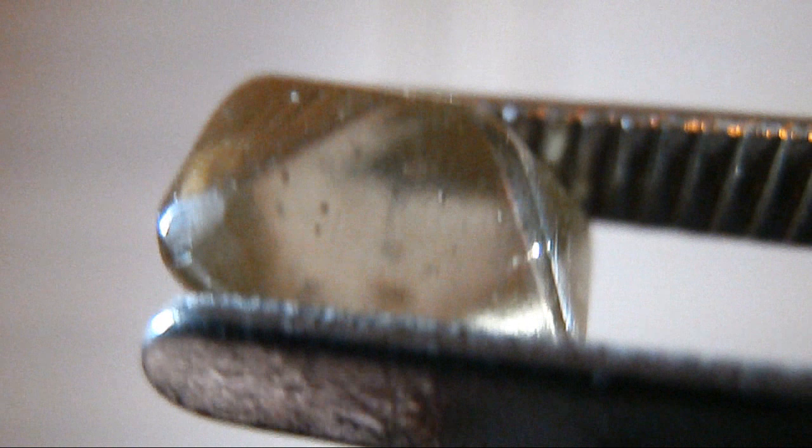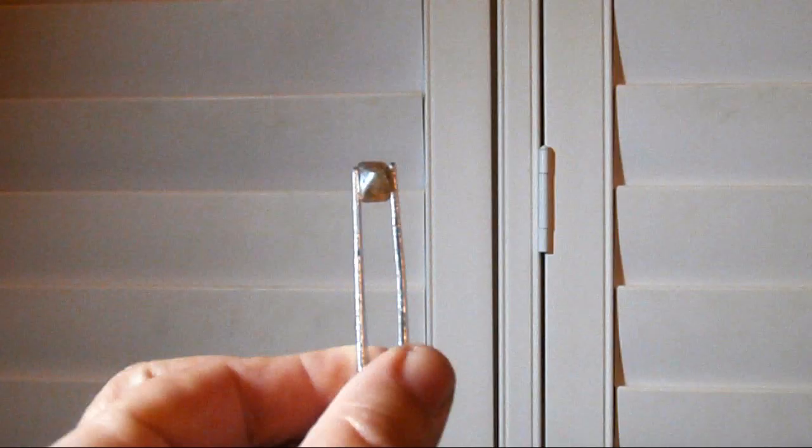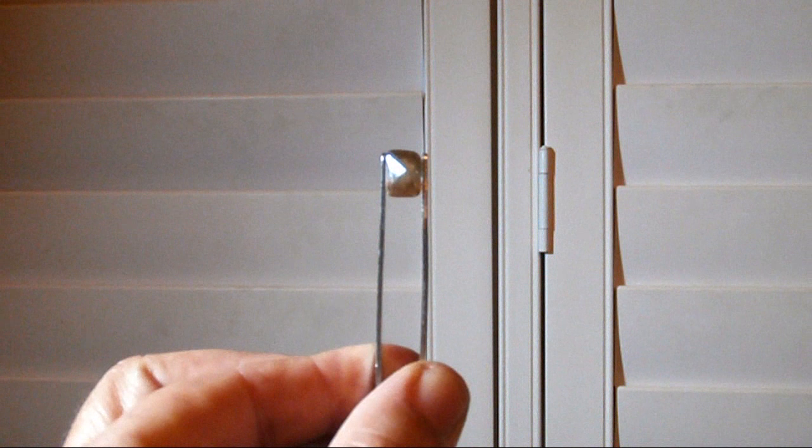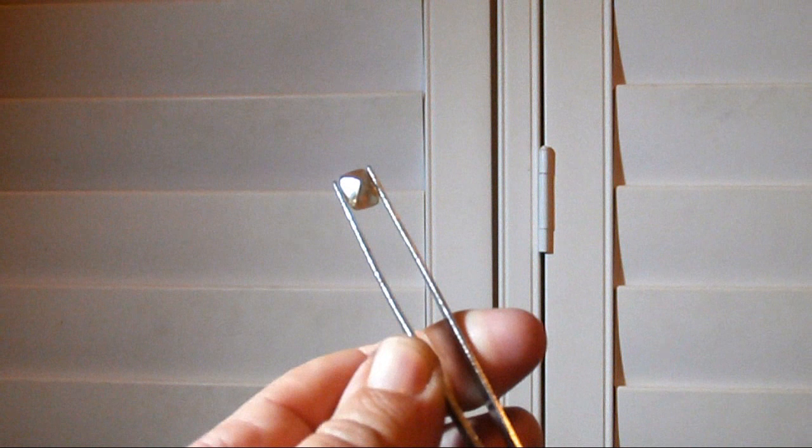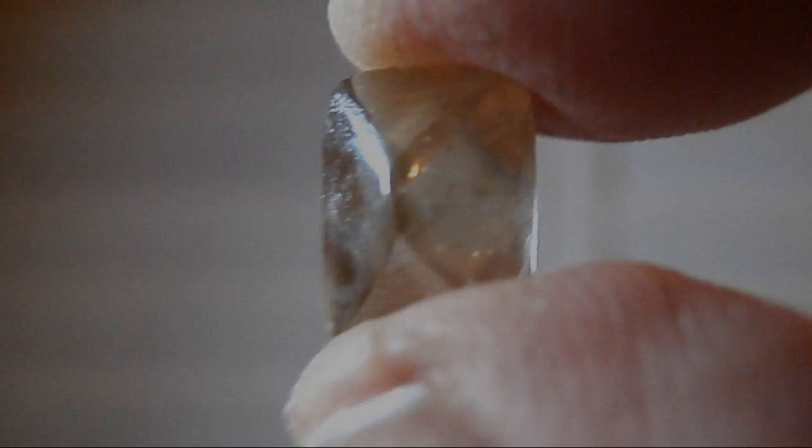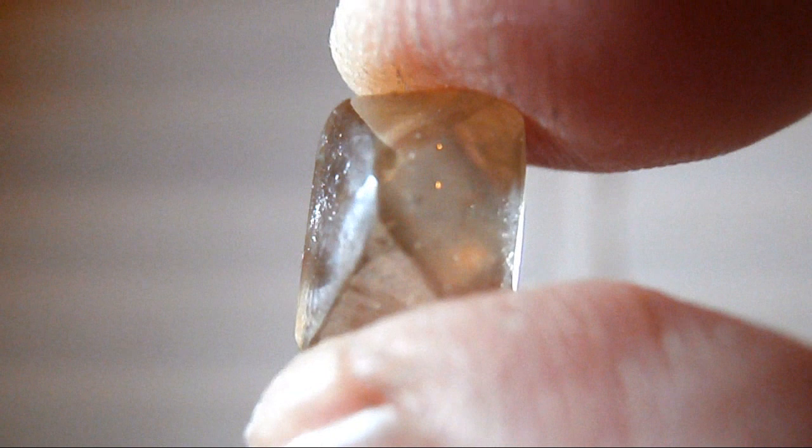Due to moissanite's rarity in nature, most moissanite these days is lab grown. Moissanite was initially introduced to the jewelry market in 1998 by a company known as C3 Inc., which is more commonly known as Charles and Colvard. They were the first company to receive the patents to create and market lab grown silicon carbide gemstones, which was trademarked under the name Forever One, Forever Brilliant and Forever Classic. These days, moissanite is lab created all over the world in countries such as China, India or Russia.